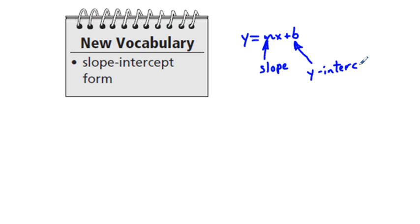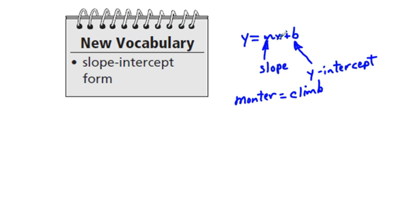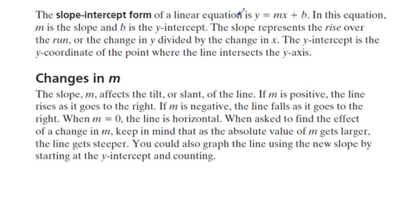Why m for slope? I'm not sure, but the word in French for climb is 'monter,' so m could stand for that. Slope-intercept form of a linear equation is y equals mx plus b, where m is the slope and b is the y-intercept. The slope represents rise over run, or change in y divided by change in x. The y-intercept is the y-coordinate of the point where the line intersects the y-axis. We've covered this in previous lessons 18 and 19.